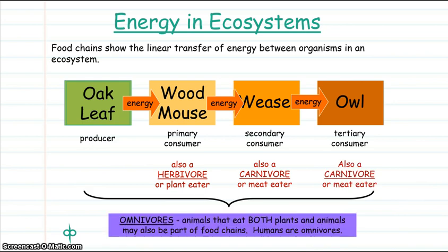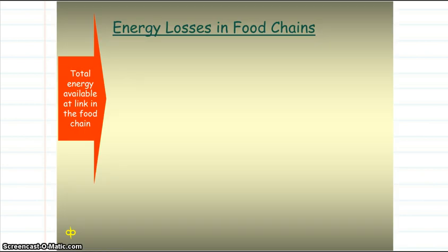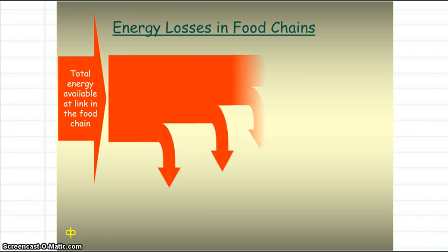However, any organisms that would eat all of those other organisms in the food chain would be omnivores. Within any food chain, there are energy losses between the different trophic levels. The width of this arrow represents energy.